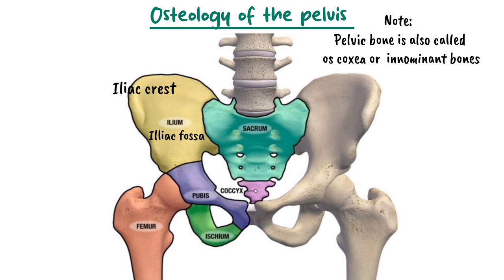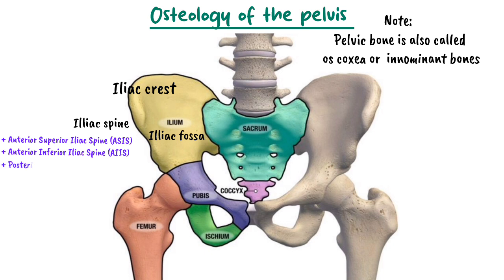The third landmark is the anterior and posterior iliac spines. There are four spines found on the ilium: the anterior superior iliac spine, the anterior inferior iliac spine, the posterior superior iliac spine, and the posterior inferior iliac spine. The fourth landmark found on the ilium is the gluteal lines. There are three gluteal lines that serve as points of attachment for gluteal muscles: the posterior gluteal line for gluteus maximus, the anterior gluteal line for gluteus medius, and the inferior gluteal line for gluteus maximus.